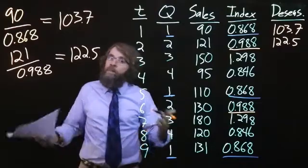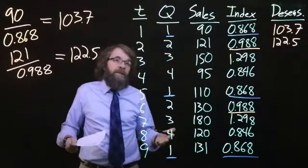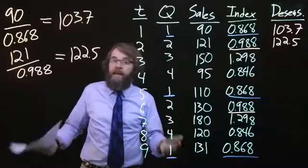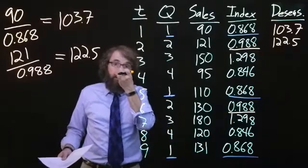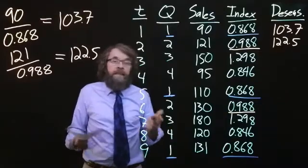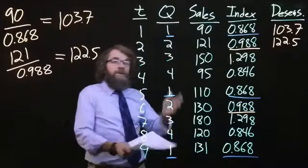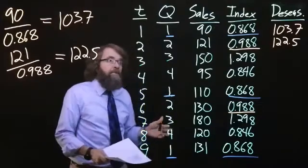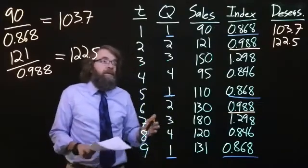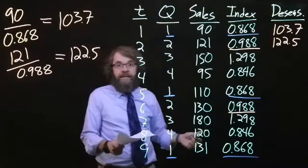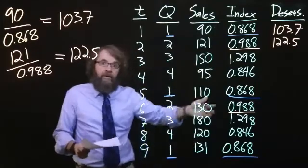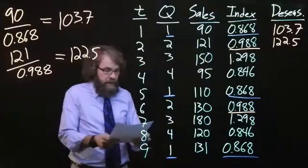And so, why are we doing this? Like I said, we're trying to see what would happen if there had not been any seasonality. Last time I graphed the original sales, and now I will graph the original sales and the de-seasonalized numbers after I write down the rest of the de-seasonalized numbers.